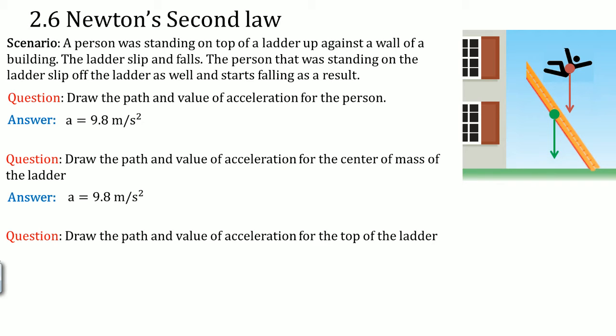Now, you want to draw the path and the value of the acceleration on top of the ladder. The fact that it's no longer at the center of mass, it's at the top of the ladder. Notice that the arrow here is longer.